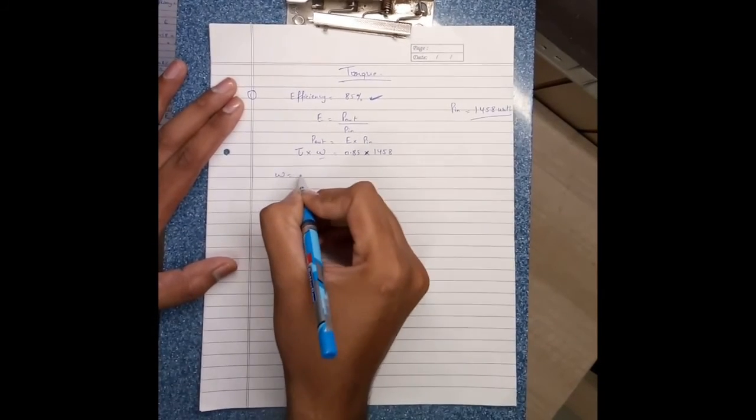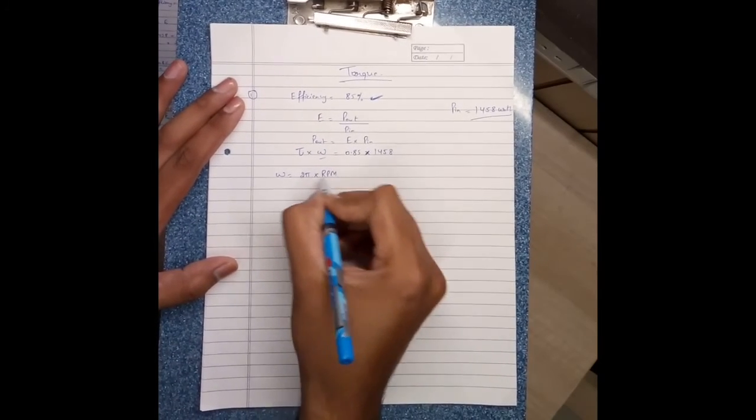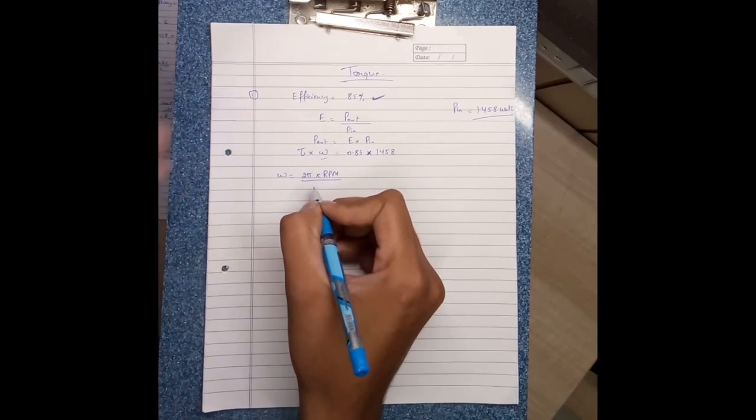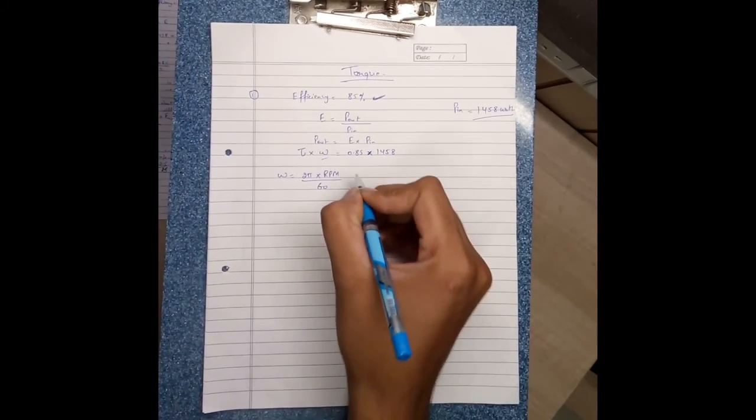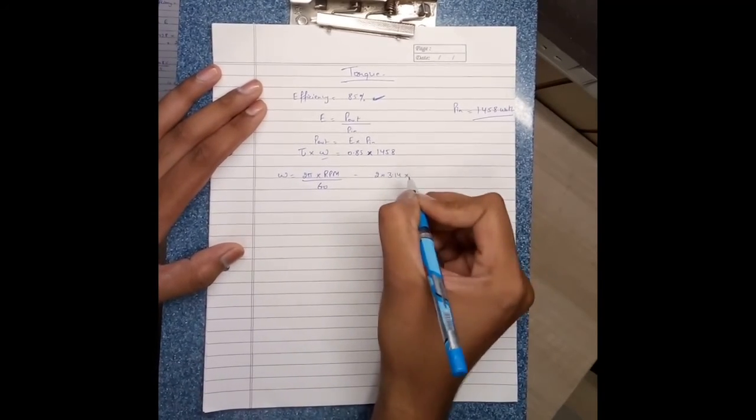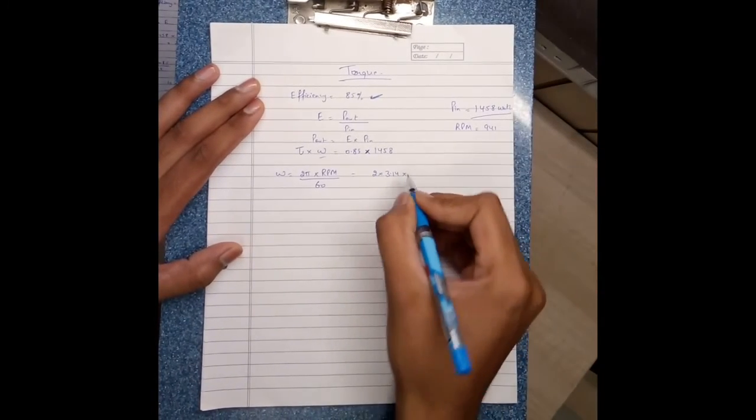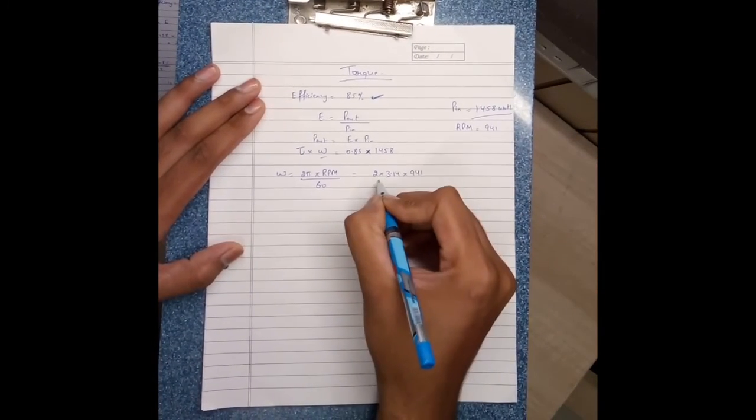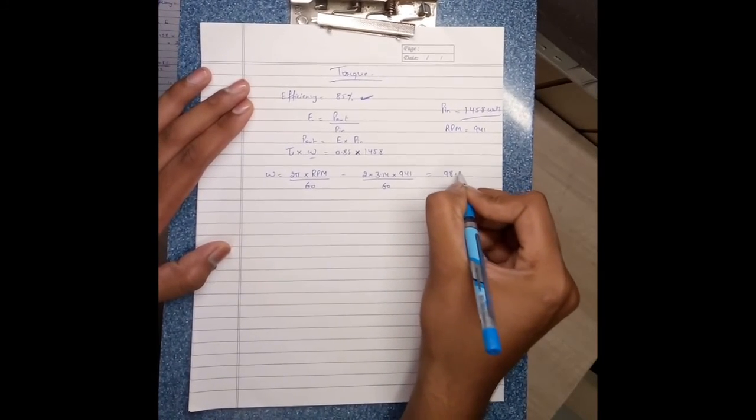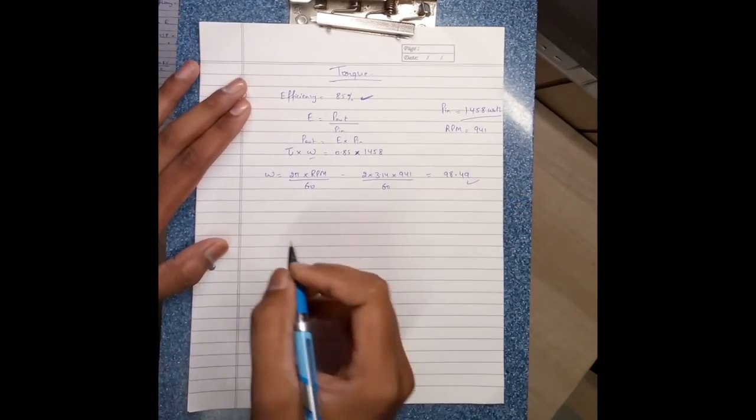Omega equals 2 pi times rpm divided by 60. Using 2 times 3.14 times the rpm from last time, 940 rpm, divided by 60, this gives omega approximately 90.4. This is the value of omega.